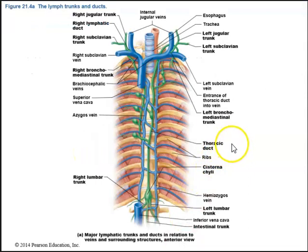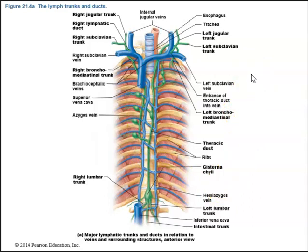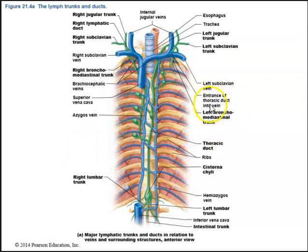All lymph trunks on the right side will drain into the right lymphatic duct, whereas trunks on the left will drain into the thoracic duct. Structures on the left drain into the thoracic duct into the vein.